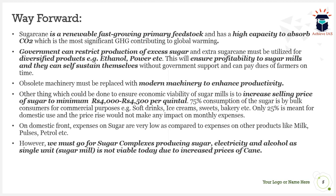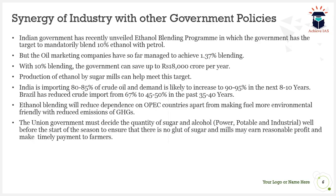We must go for sugar complexes — mills capable of producing sugar, electricity, and alcohol together. This will make mills economically viable so they can compensate farmers, become self-reliant, and operate without ongoing government support.